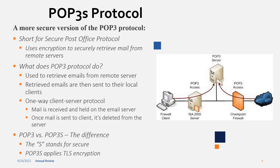We're going to start off with POP3S. Both of these protocols we're covering are secure versions, so before I can talk about the secure version I have to explain what POP3 and SMTP are. POP3 is a protocol that allows us to retrieve emails from remote servers and send them to the client. It establishes a client-server connection, and what makes it special is that after the email is received and held by the email server and sent to the client, it's then deleted from the server — it enacts a one-way connection.